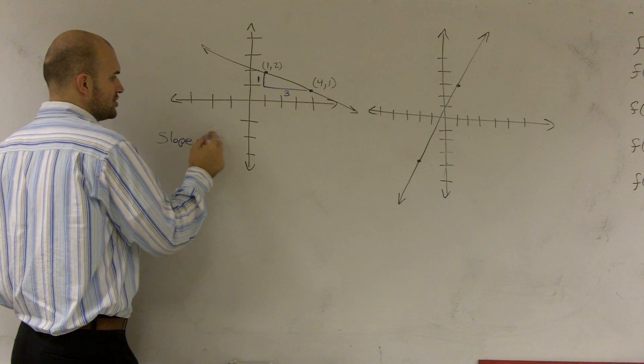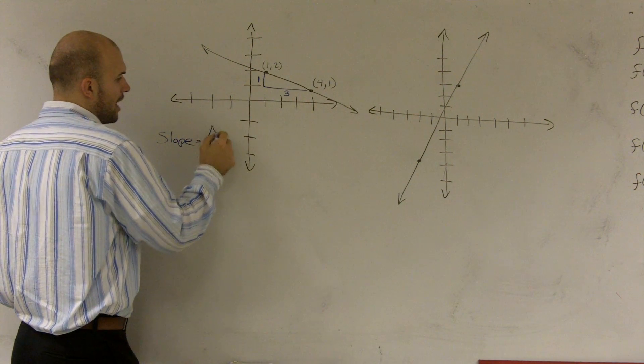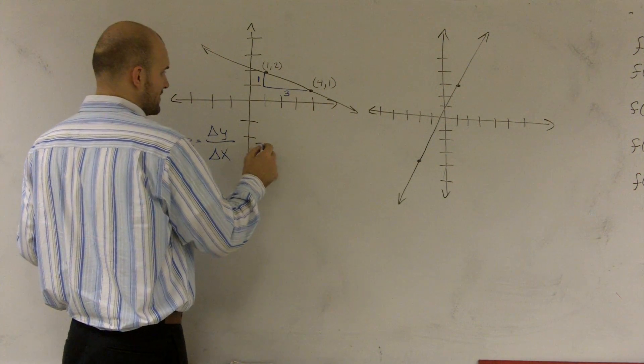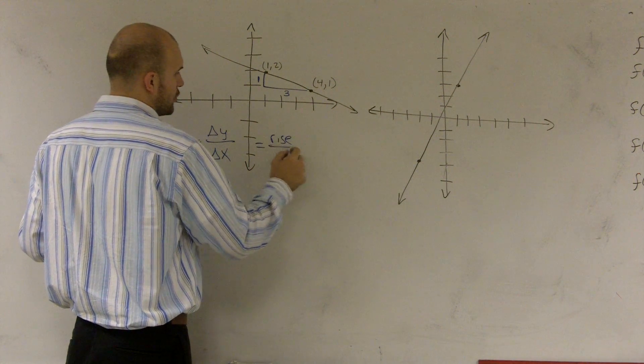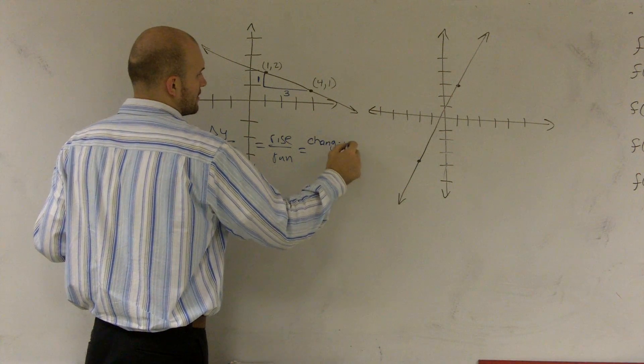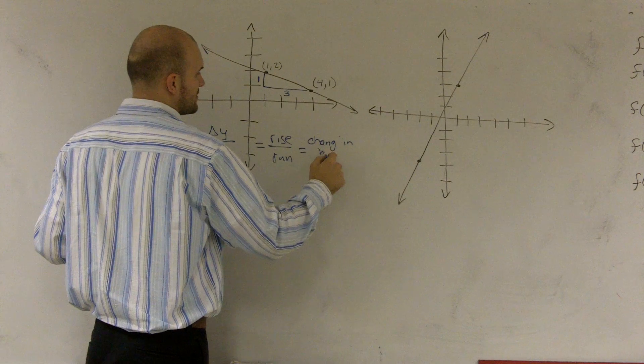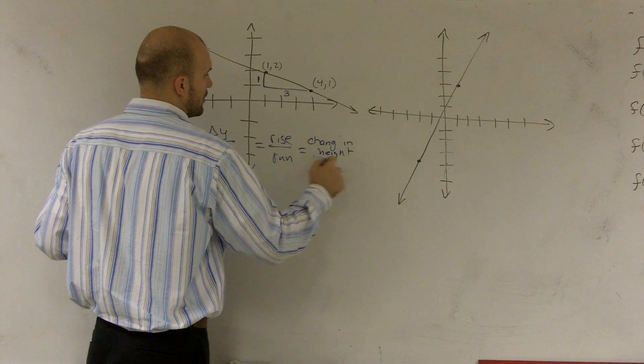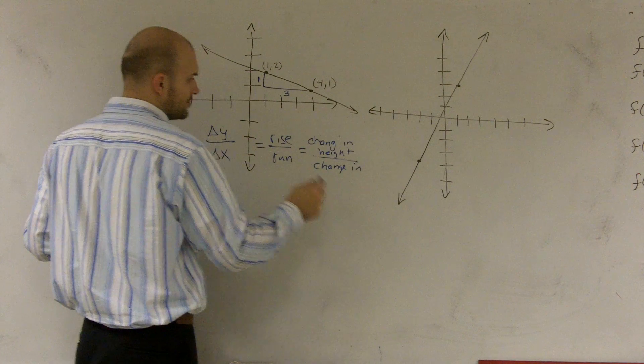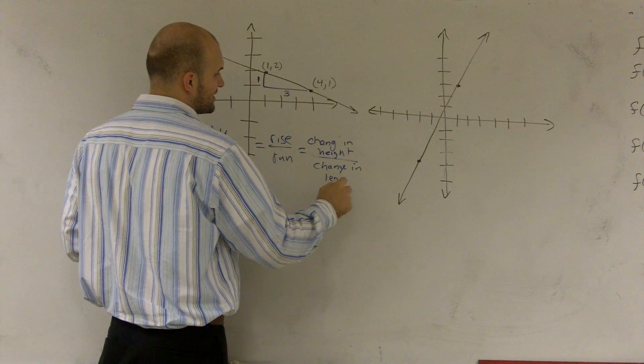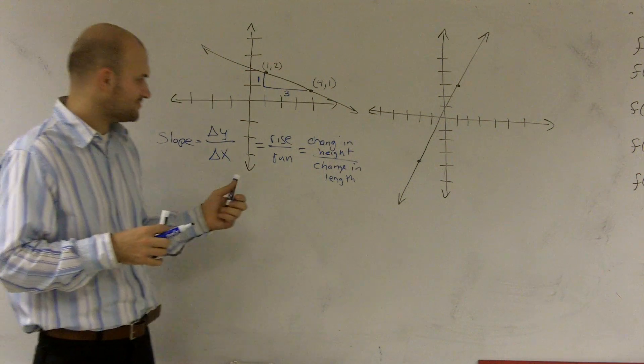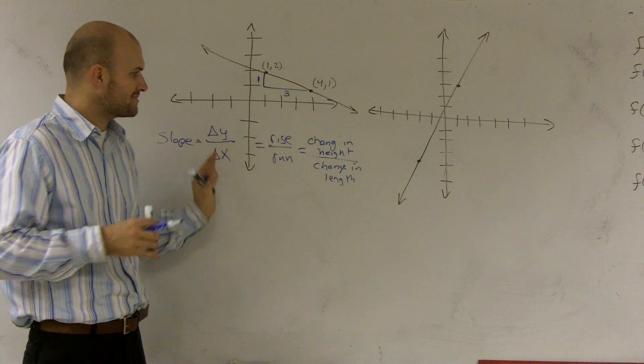Slope. A lot of times we say it's the change in your y over your change in your x. Or that could mean your rise over your run. Or it could mean the change in your height over your change in your length or distance or left or right.